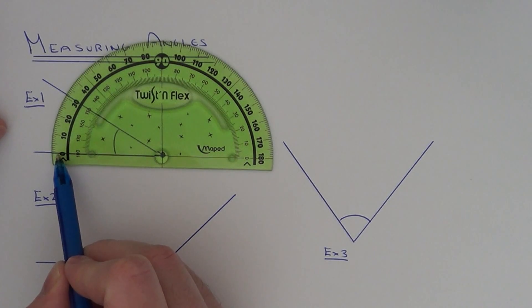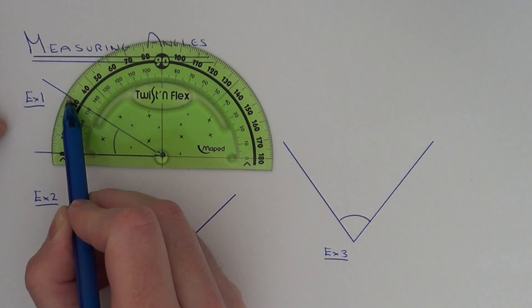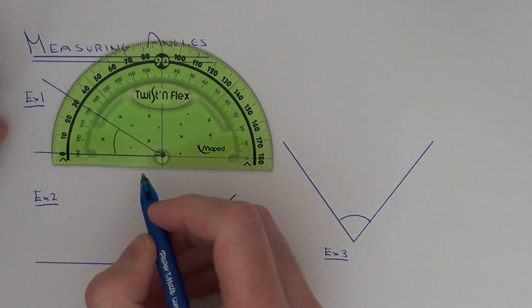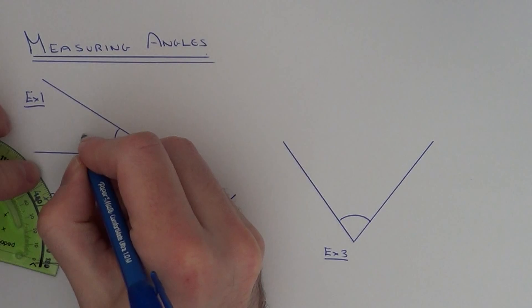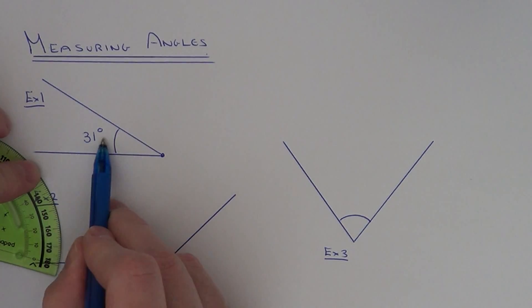So let's use the outside scale then. Start off at zero, go around clockwise: 10, 20, 30, and that is 31 degrees. You can write the angle into the corner. You can put it on the outside or you can put it inside, it doesn't really matter.